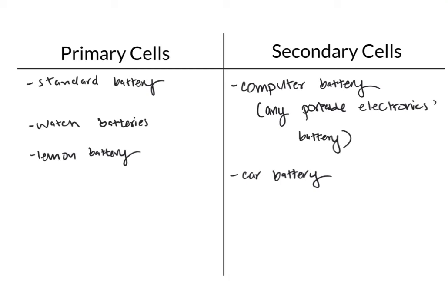To summarize, a primary cell is any battery that cannot be charged. Some common examples of primary cells are your standard batteries, the batteries you use in your watch, and any kind of fruit battery that you might make for a science project.